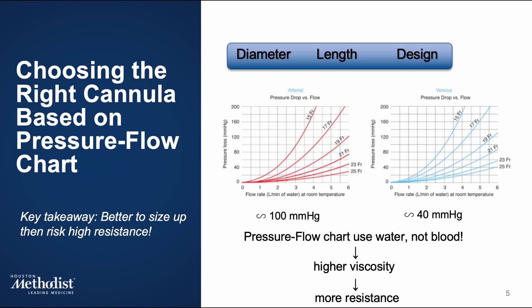For example, if we have a patient who needs 6 liters per minute of flow and a 21 French arterial cannula gives us a pressure drop of 140 mmHg, that's too high — a 24 French cannula would be better. It handles that flow with less resistance and stays within a safe pressure range. It's also important to keep in mind that pressure-flow charts are often based on water, not blood. Since blood is more viscous, the actual pressure drop will be higher than what the chart suggests. That's why we usually select a slightly larger cannula than what the chart alone would recommend.